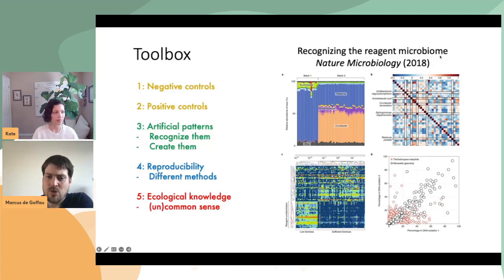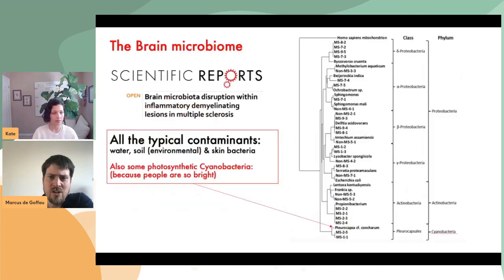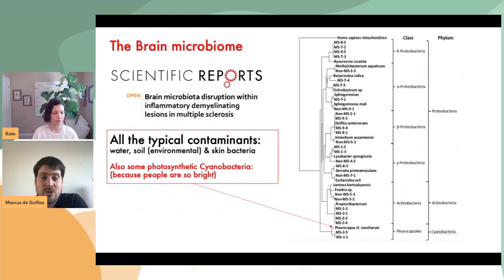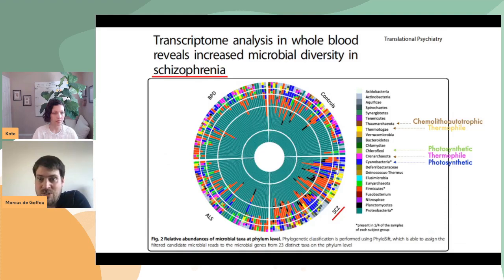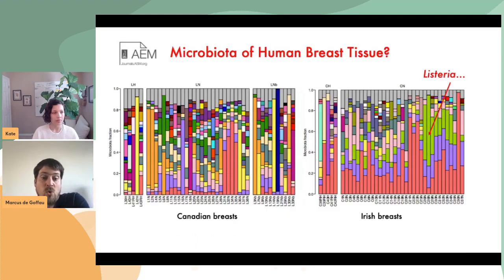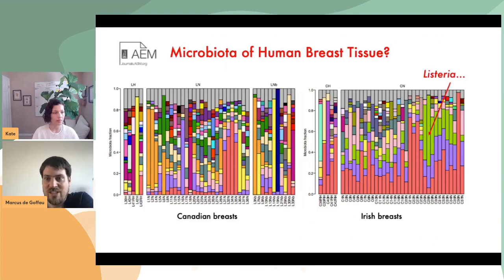Last but not least, use ecological knowledge — use your common sense — and you'd be surprised how infrequently common sense is used nowadays. For example, would you believe in a brain microbiome that contains photosynthetic bacteria? Or that you might become schizophrenic because of a blood microbiome that amazingly contains photosynthetic bacteria, thermophiles, and chemoautotrophic bacteria? Or that Canadian breast tissue samples are completely different from Irish breast tissue samples, and that Irish breasts contain Listeria? I'm not buying it.